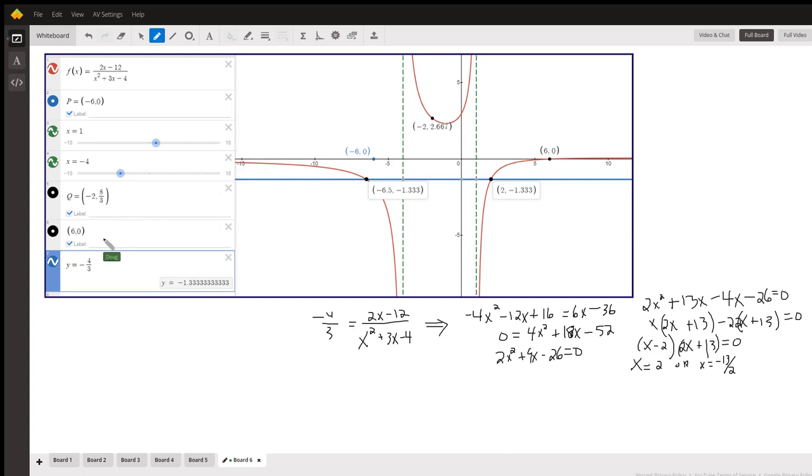Here's what it looks like on the graph. When y equals negative 4 thirds, that's this blue line right here. There are the corresponding x coordinates, where that line crosses the red graph, 2 and negative 6 and a half. Now, how do you find those algebraically?